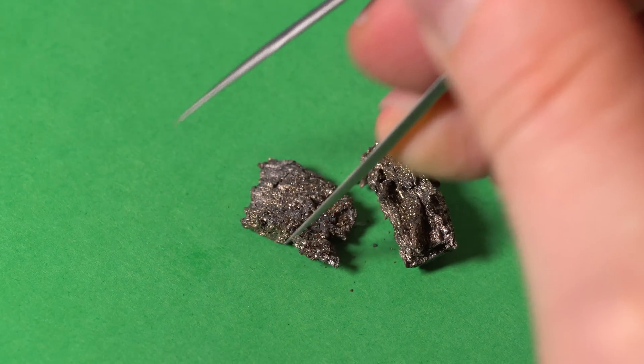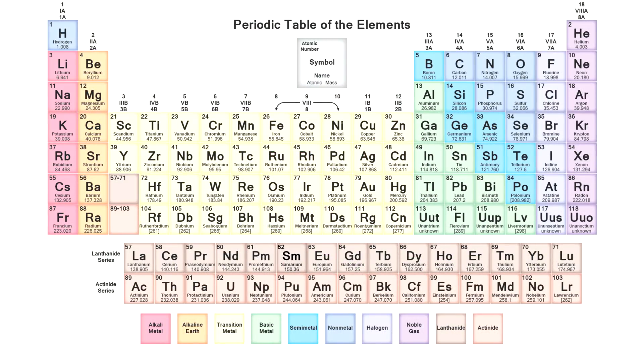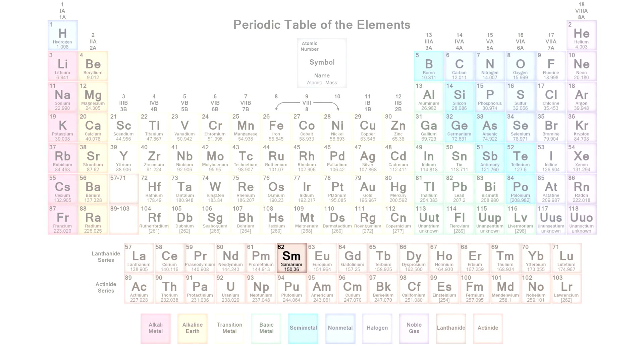Hello everyone! Today I want to tell you about the metal samarium. Samarium is a rare earth, so-called F-metal. It is located in the lanthanide portion of the periodic table of chemical elements.